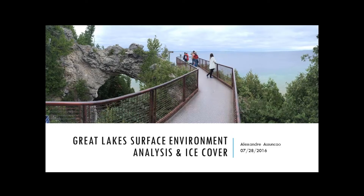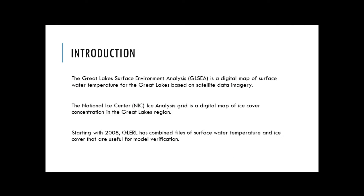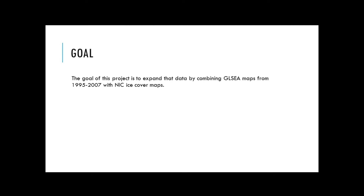For my second project, I will talk about the Great Lakes Surface Environment Analysis and ice cover. The Great Lakes Surface Environment Analysis (GLSEA) is a digital map of surface water temperature of the Great Lakes based on satellite data imagery, while the National Ice Center (NIC) provides similar data but for ice concentration. Starting with 2008, GLERL has combined files of surface water temperature and ice cover useful for model verification. The goal of this project was to combine both datasets — the GLSEA with the NIC — from 1995 to 2007.